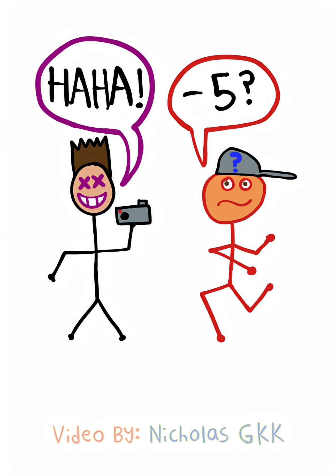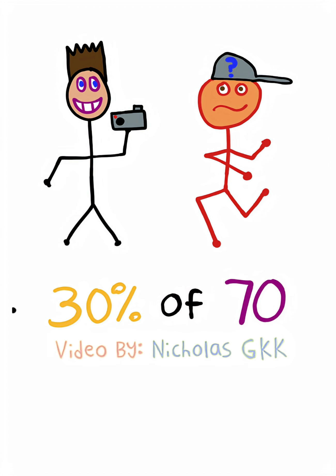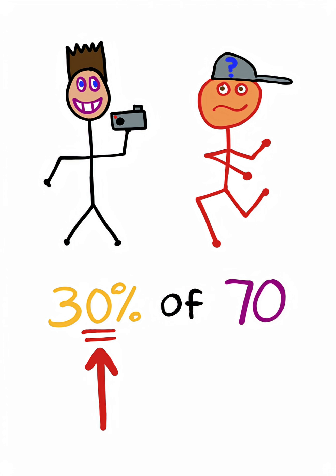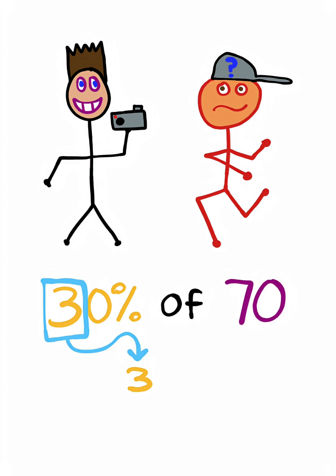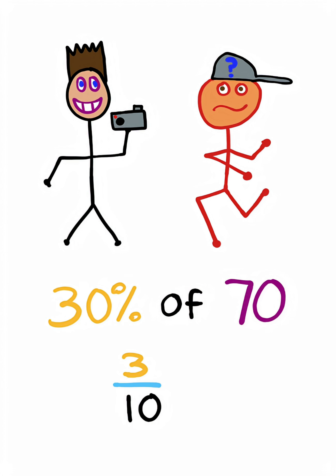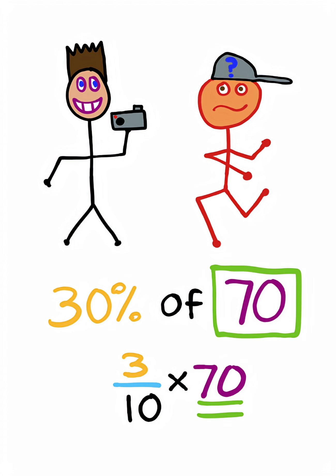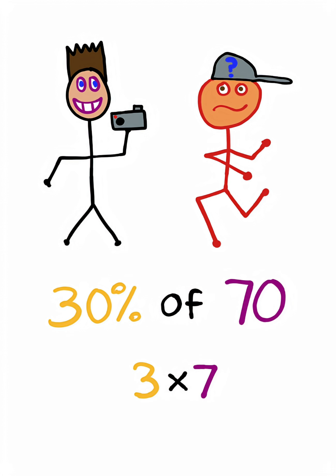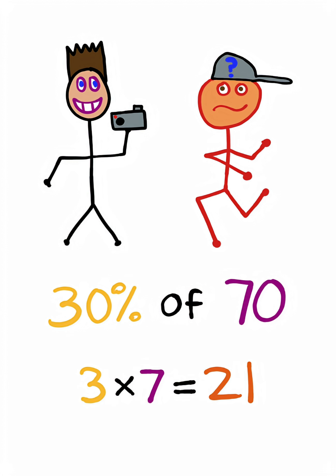Here's what you need to do. Whenever you have a percentage that ends in 0, take the frontmost number, divide it by 10, and multiply it by the number in question. The 10 on the bottom will cancel out a 0, and 3 times 7 is 21.